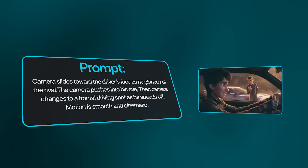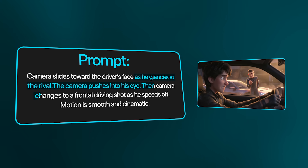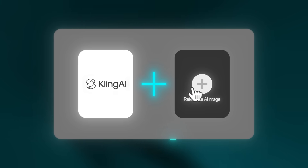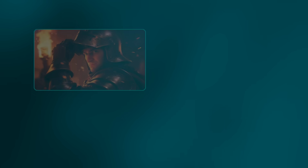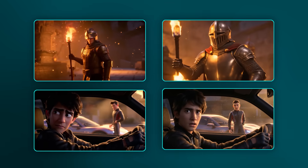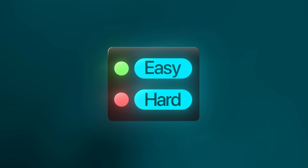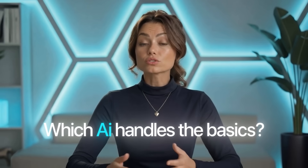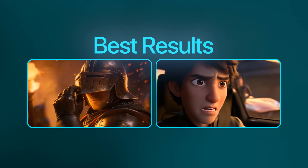After that, for the hard test, we're going to want the character to glance at a rival outside, then the camera pushes into his eye, then transitions to a frontal driving shot as he speeds off. This test is designed to push the AI models to their limits — it's not just about animation, but also about timing, perspective, and realism. Any inconsistency becomes very noticeable here, which makes it perfect for comparing which tool handles high-level complexity the best. Once we go through these two tests, I'll be breaking down all five models in a tier list at the end, and we'll see which AI handles the basics, which shines in complex scenes, and ultimately which one I'd recommend if you want the best results without spending extra time or credits.